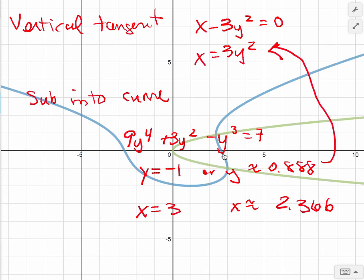Yep, there's a vertical tangent. And over 2.366, yeah, that's about there. And then up a little bit less than 1. Yep, that one's there.